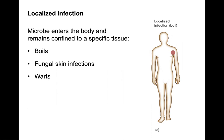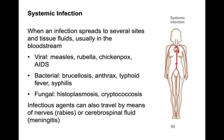There are different types of infections. A localized infection is when a microbe enters the body and remains confined to a specific tissue, such as fungal skin infections, warts, or boils. A systemic infection spreads to several sites and tissues, usually through the bloodstream — examples include viral diseases like measles, rubella, chickenpox, and HIV; bacterial diseases like brucellosis, anthrax, typhoid fever, and syphilis; and fungal diseases like histoplasmosis or cryptococcus. Infectious agents can also travel by nerves, such as rabies, or through cerebrospinal fluid in meningitis-type infections.